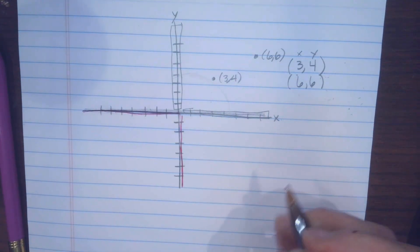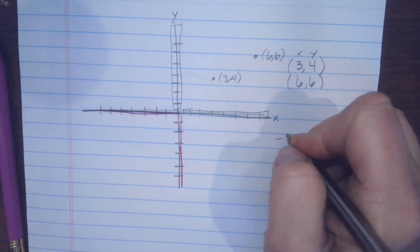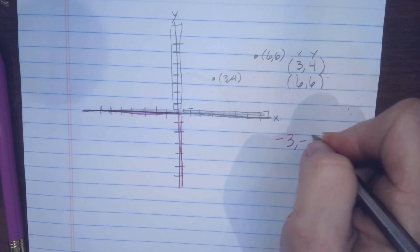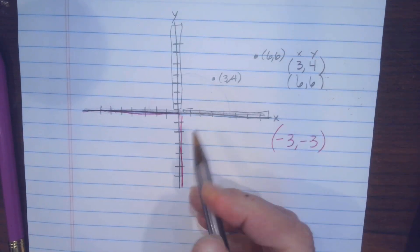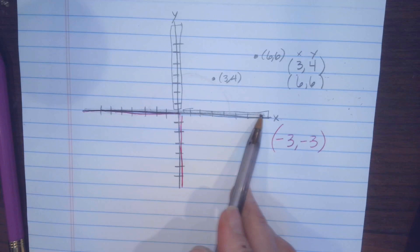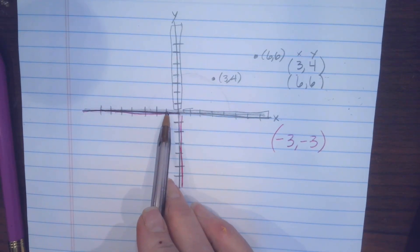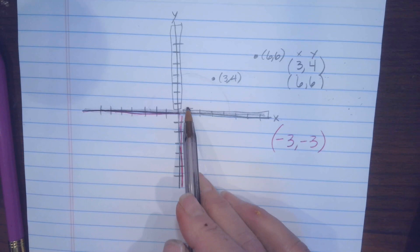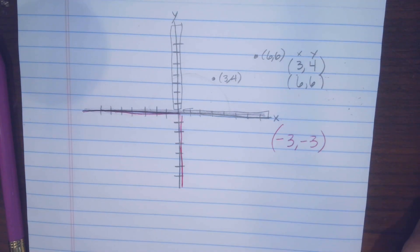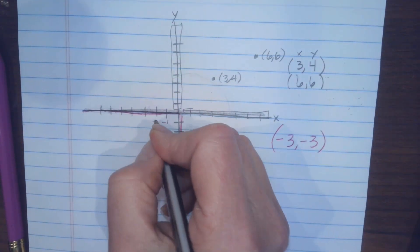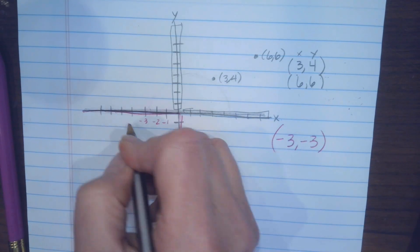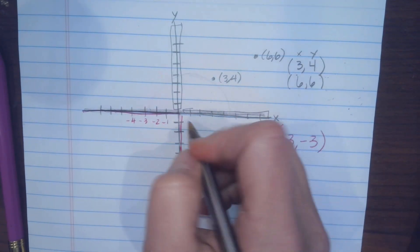So if you have a negative 3, negative 3, we're going to use our horizon line, our x-axis first and we're going to go this way instead of this way. Does that kind of make sense to you? That this is negative 1, this is negative 2, this is negative 3, this is negative 4. Yeah, and so on.